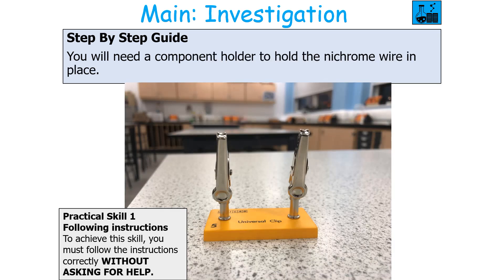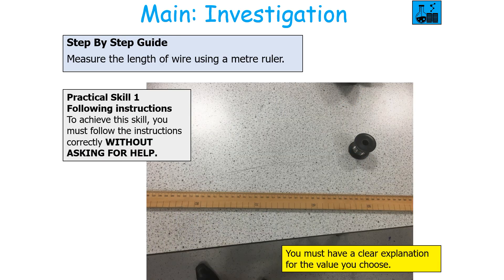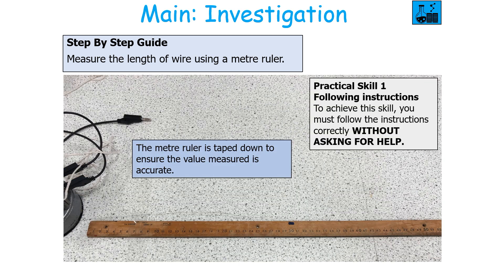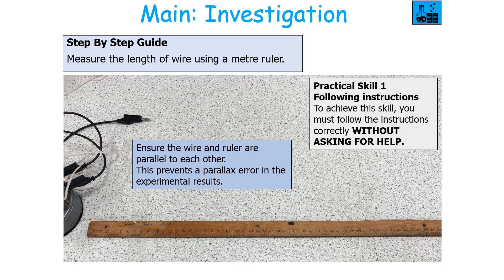You would also need a component holder to hold the nichrome wire in place and you would measure the length of the wire using a metre ruler. A good experimenter should decide the length of wire to use with a clear explanation for why that value was chosen. The metre ruler should be taped down to ensure accuracy, the wire pulled taut so no kinks are present, and the wire and ruler kept parallel to each other to prevent a parallax error.